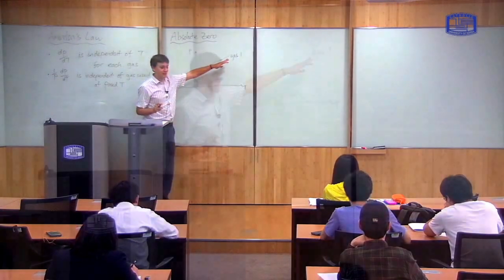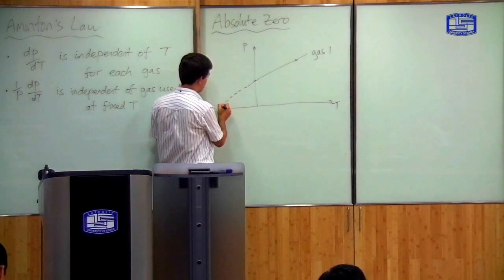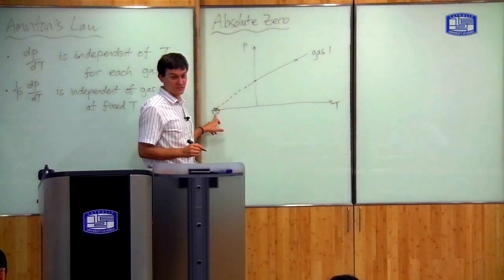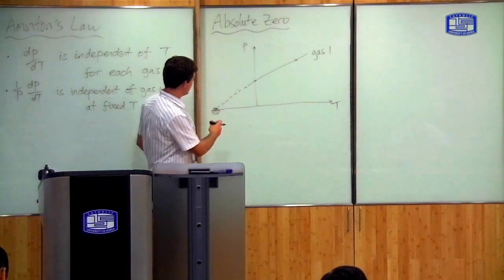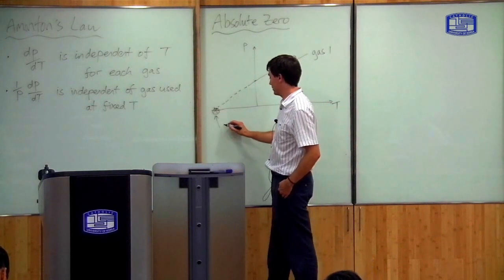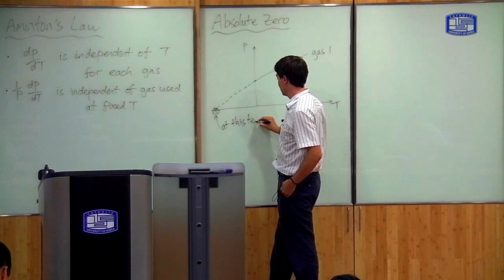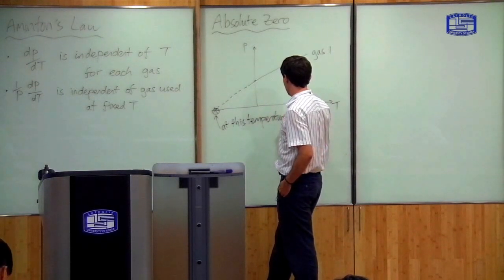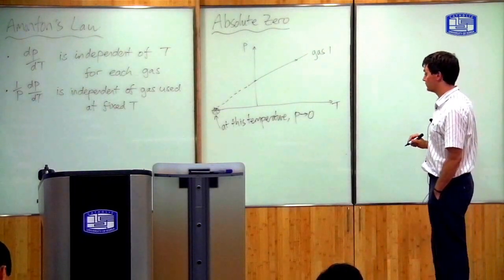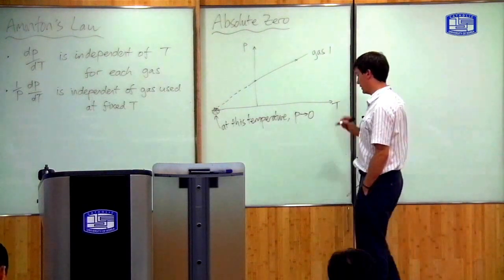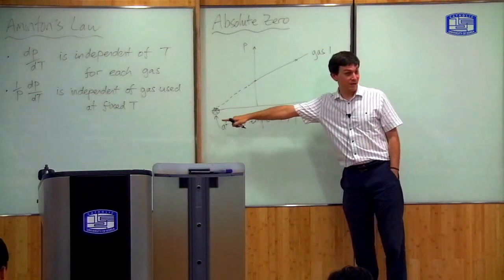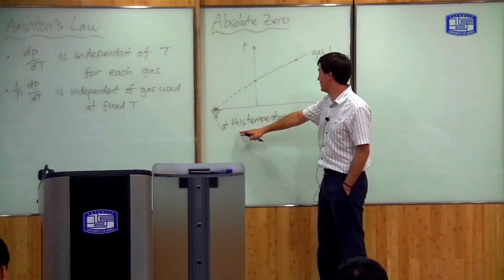Now, because this is a straight line, in theory, if you go down low enough in temperature, it should still be a straight line, and you will reach a point at which the pressure of the gas goes to zero. Just by going down and down — this is a straight line — so eventually you will reach a point in theory where the pressure of the gas goes to zero. At this temperature, the pressure of the gas goes to zero. So the question is: how do we calculate this theoretical temperature at which the pressure of the gas goes to zero?